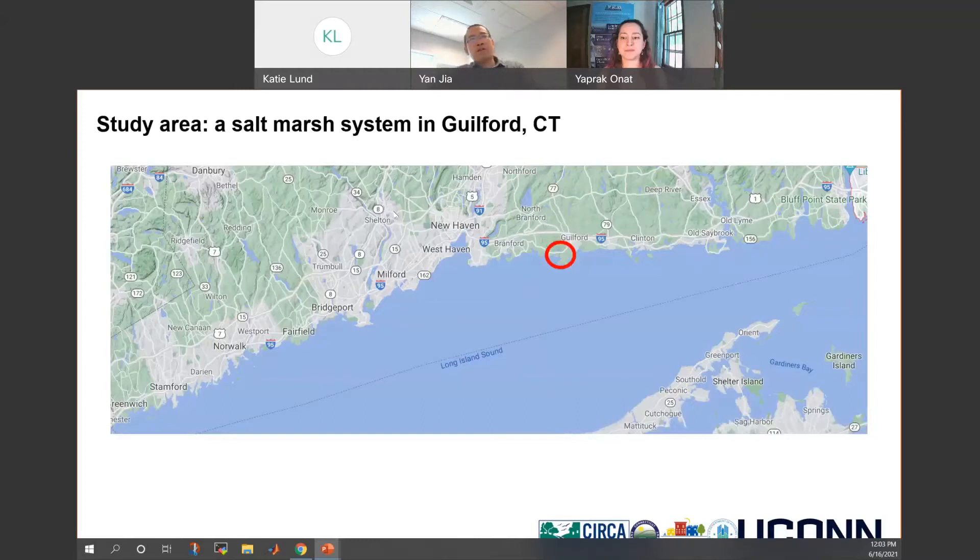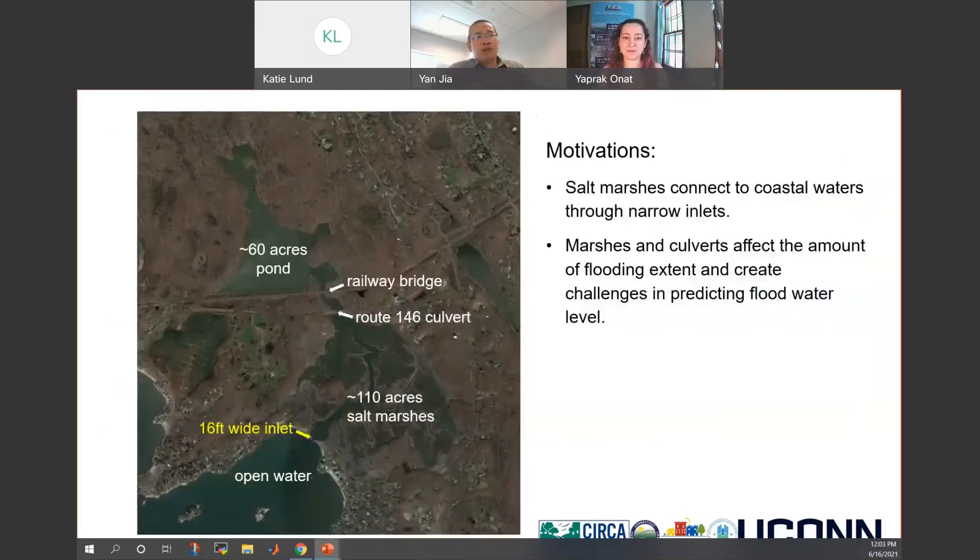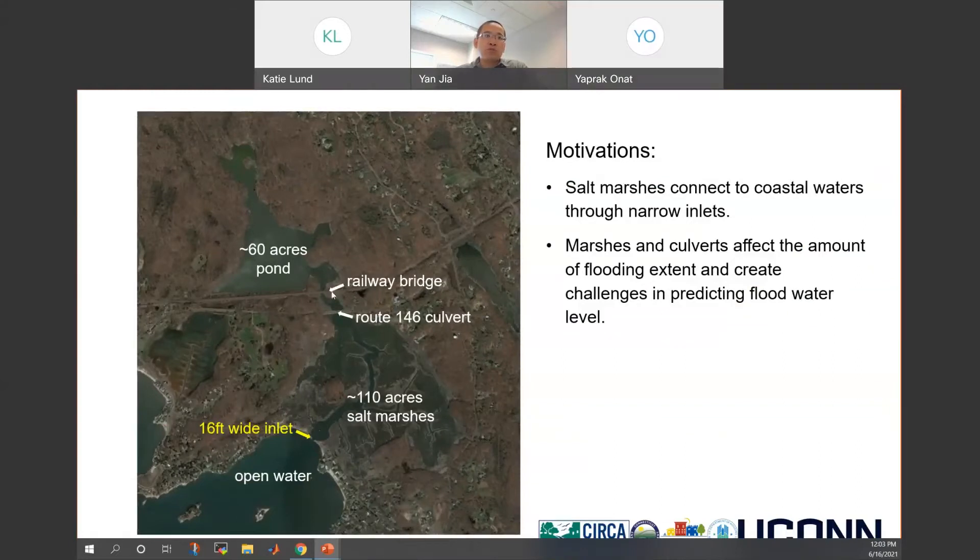So our study area is related to a salt marsh system in Guilford marked as a red circle on this map. I zoom in to see more details. This salt marsh in Guilford has an area about 110 acres. It's only connected to the open water through a 16 feet wide inlet. And to the north, there's another extra 60 acres of pond connected to the salt marsh through a railway bridge and a culvert.